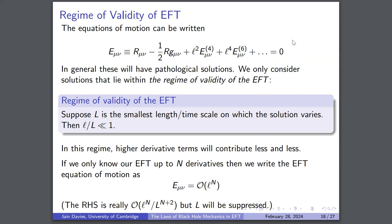If we only know our effective theory up to some n derivatives, we can write the equation of motion as equal to zero up to terms of order ℓ^n. These are the theories we'll discuss recent progress in.